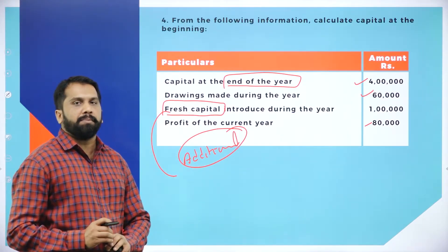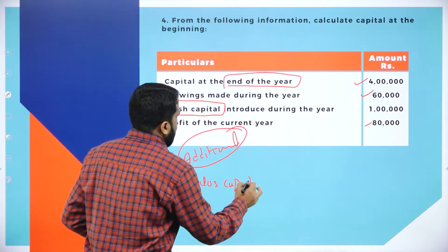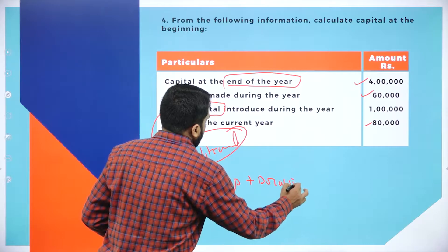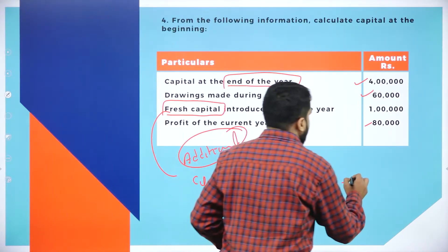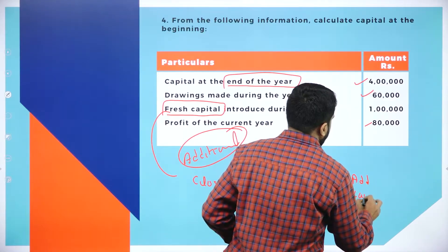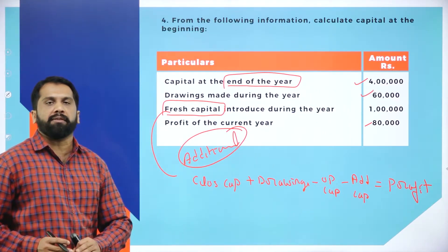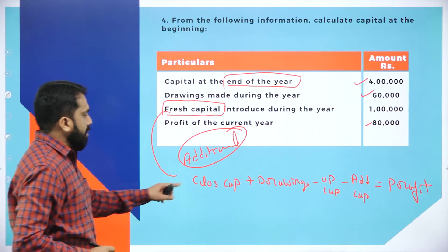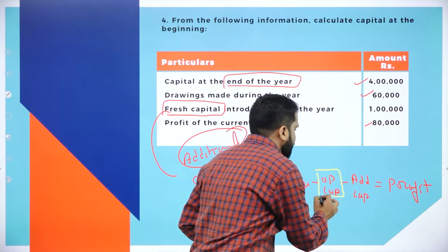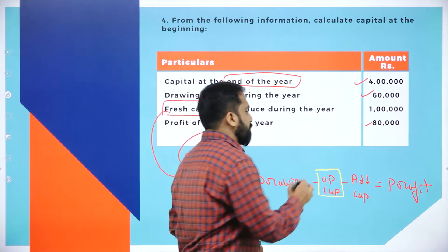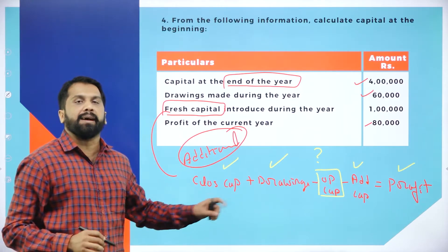How to find out opening capital? Normally the format is: closing capital plus drawings, minus opening capital, minus additional capital equals profit. In this problem, closing capital is given, drawings are given, additional capital is given, and profit is also given — but opening capital is not given. We need to find opening capital by rearranging the formula.